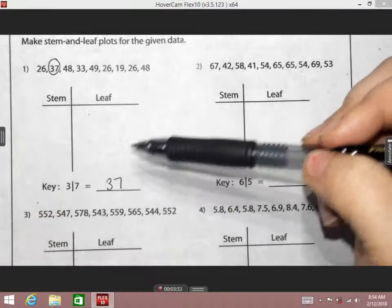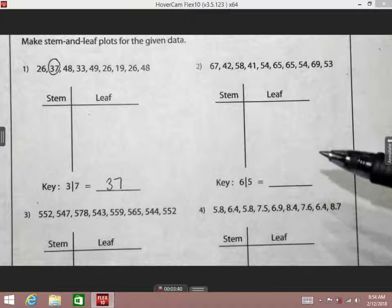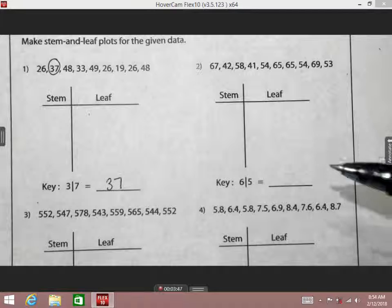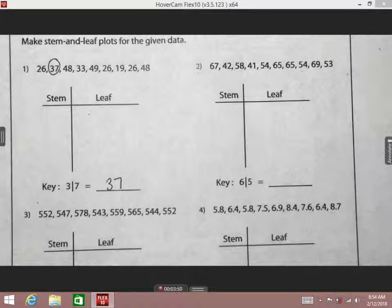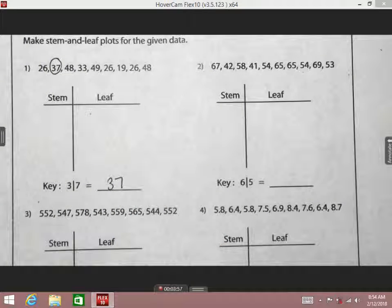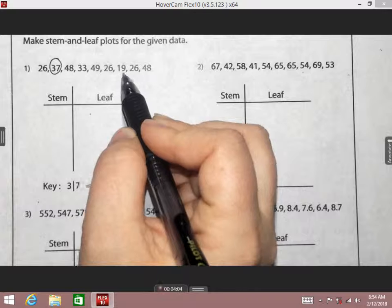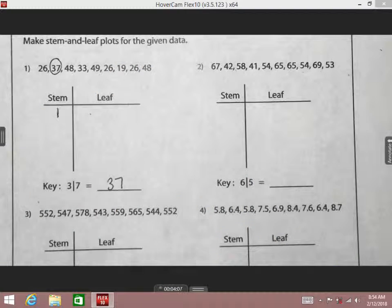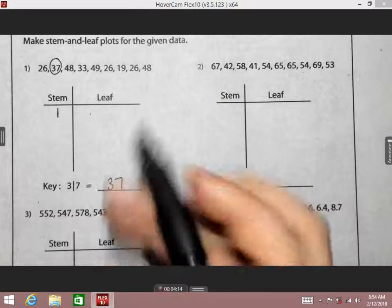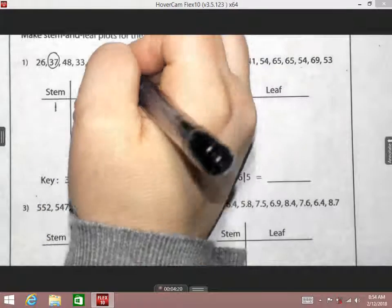We have a key for these stem-and-leaf plots. Do you all see a three and a seven anywhere? Do you all see that 37? So this three, separated by the line, the three is standing for the thirties, and the seven is standing for my ones. When I put thirties and then seven together, what does it make? 37. So that's what my key means. So we need to fill that in.